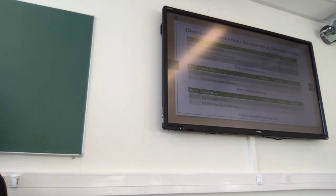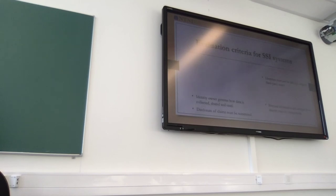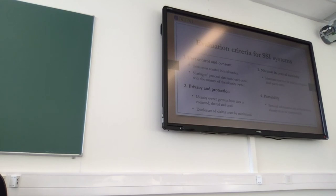There are some SSI systems currently proposed by researchers and industry. I'll give you some criteria — a framework based on Christopher Allen's work and other literature — that can help us evaluate SSI systems. Let's go through them together. The first is user control and consent: in an SSI system, users must control their identities and decide what personal data they will share and to whom.